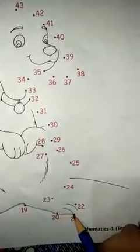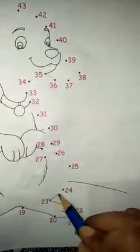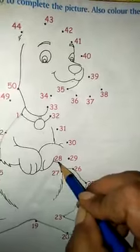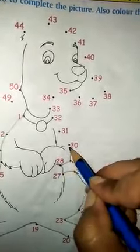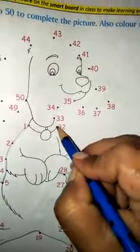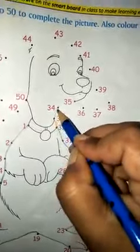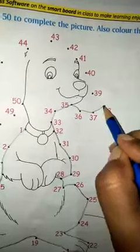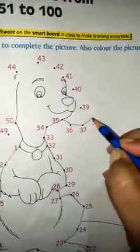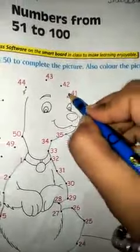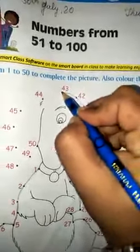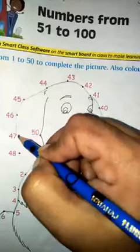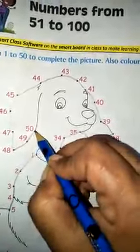20, 21, 22, 23, 24, 25, 26, 27, 28, 29, 30, 31, 32, 33, 34, 35, 36, 37, 38, 39, 40, 41, 42, 43, 44, 45, 46, 47, 48, 49, 50.